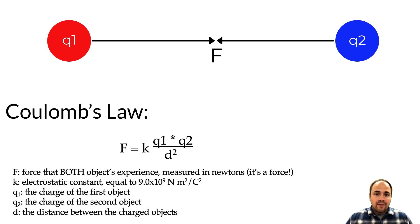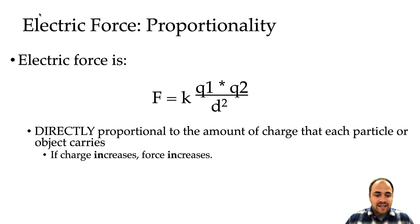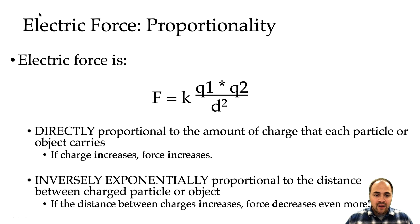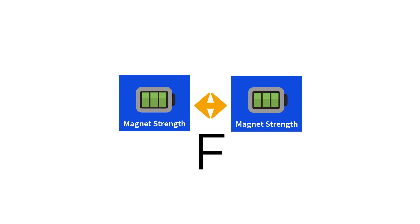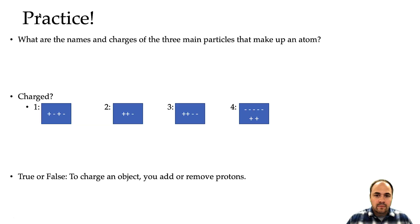That product is divided by the distance between them squared — and that squared is important. Electric force is directly proportional to the amount of charge of the two objects interacting, and it is inversely proportional to the distance between those objects. Because of that distance squared, changes in distance have an exponential effect on force. Like magnets — if you increase the strength, force increases; if you increase the distance by pulling them apart, that force drops significantly.